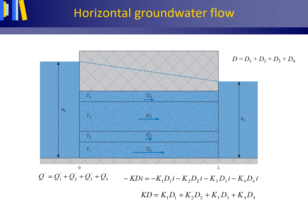Continuity, the water balance, teaches us that the volume flux or discharge through the confined aquifer equals the sum of the volume fluxes of each layer. The volume fluxes are expressed per unit width, the direction perpendicular to this figure, thus in square meters per day.